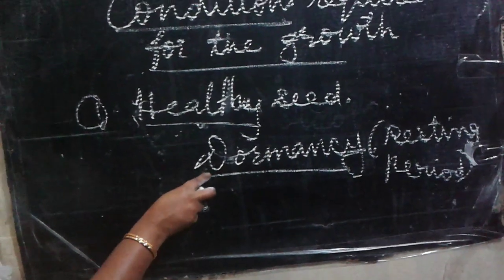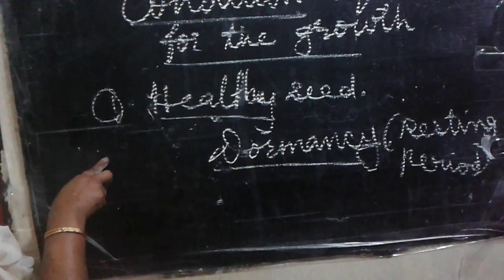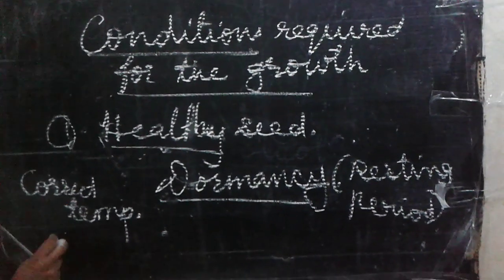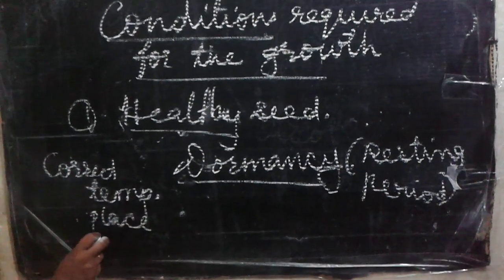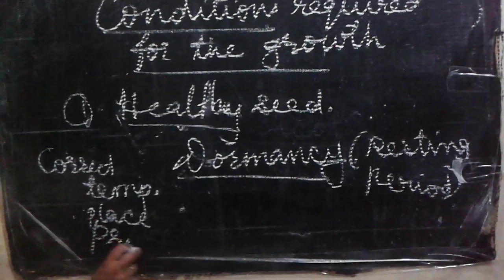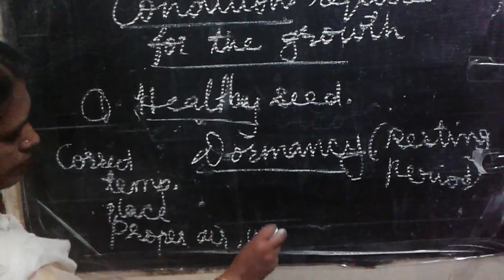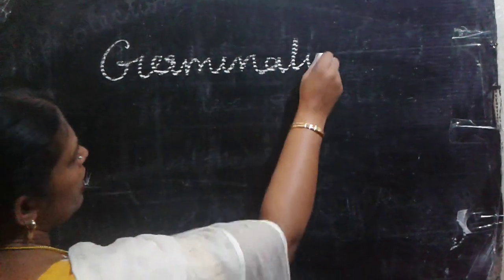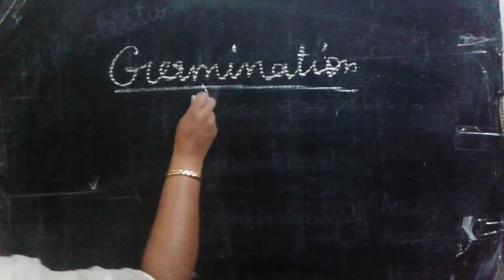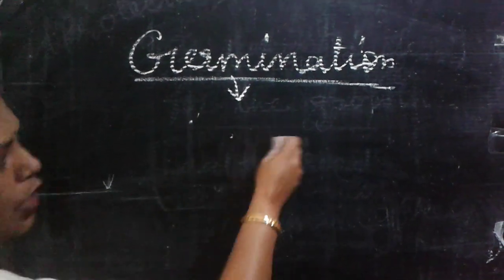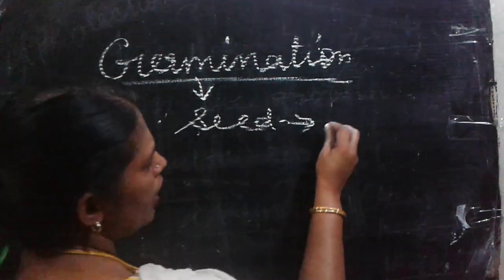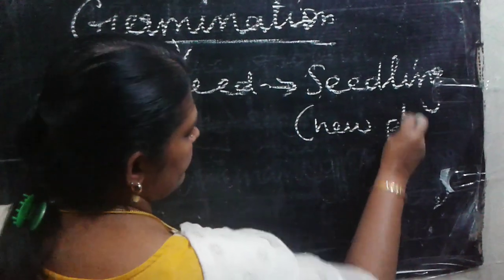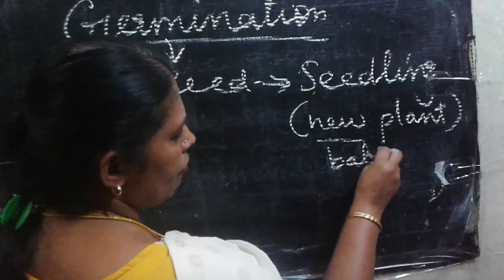When this dormancy ends and the seed gets favorable conditions — correct temperature, suitable place, proper air and water — it starts to grow. Germination means the growth of the seed into a seedling. Seedling is not something else — it is the new plant, the baby plant. We call it a seedling.